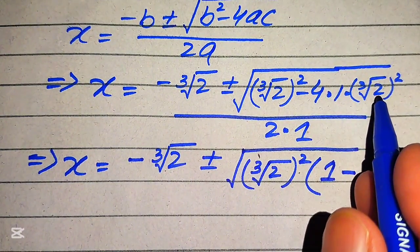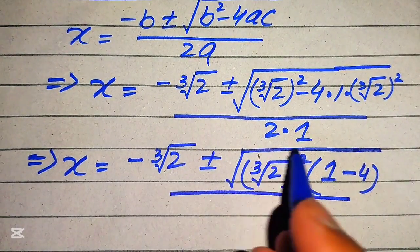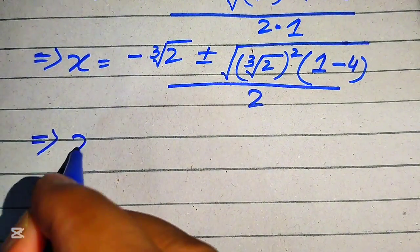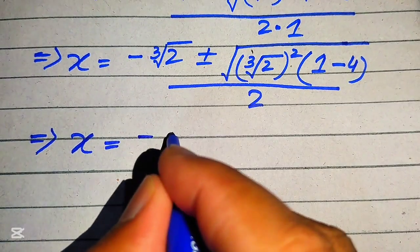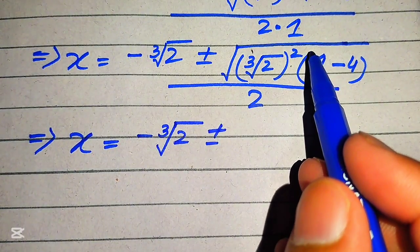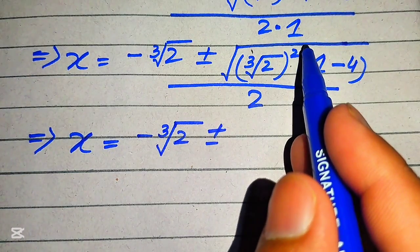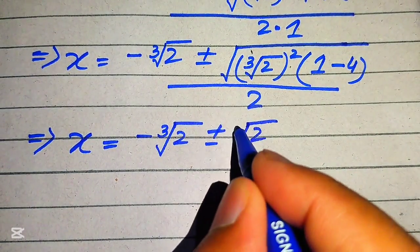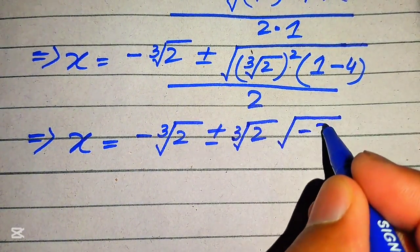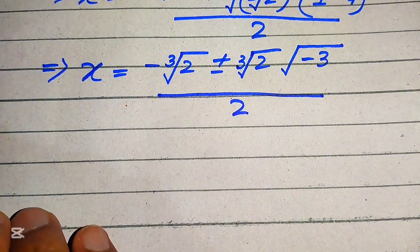Simplifying further: x equals negative cube root of 2 plus or minus, and applying the square root separately, we get cube root of 2 times the square root of 1 minus 4. Since 1 minus 4 equals negative 3, the expression becomes cube root of 2 times square root of negative 3, all divided by 2.